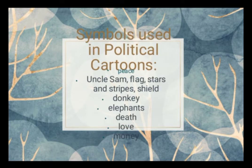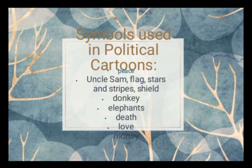Next, let's look at symbols commonly used in political or editorial cartoons. When portraying peace, we use the symbol of a dove, olive branch, or victory sign. To represent the United States, symbols include Uncle Sam, the flag, stars and stripes, and a shield. When we use the symbol of a donkey, it represents the Democrats. The elephant represents the Republicans.